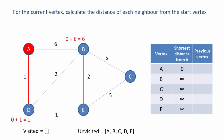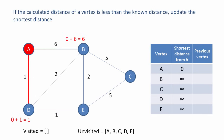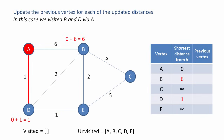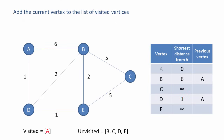For the current vertex, we calculate the distance of each neighbour from the start vertex. The distance from A to B is 0 plus 6, which is 6, and from A to D is 0 plus 1, which is 1. If the calculated distance of a vertex is less than the known distance, we update the shortest distance in our table. At the moment all of our shortest distances are infinity, so we update these two distances. We also update the previous vertex for each updated distance — we visited B and D via A. Now we add the current vertex to the list of visited vertices; we won't be visiting A again.